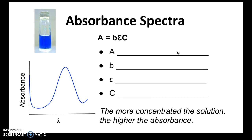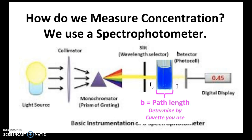Absorbance relates to concentration through the equation: Absorbance = b × ε × c, where b is path length, ε is molar absorptivity, and c is concentration. Absorbance is unitless. Path length b is measured in centimeters or millimeters, and is determined by the cuvette — the container used to hold your substance in the spectrophotometer, which will indicate its path length such as one centimeter or two millimeters.